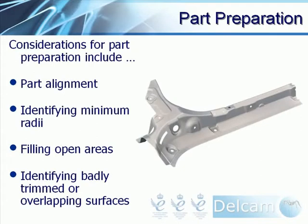When modeling for manufacture, some of the factors we need to take into consideration include part alignment, identifying minimum radii, filling of open areas, and identifying badly trimmed or overlapping surfaces. This list is not exhaustive; however, it highlights some of the key factors that will be shown within the demonstration. We shall take a slightly more detailed look at some of these areas now.